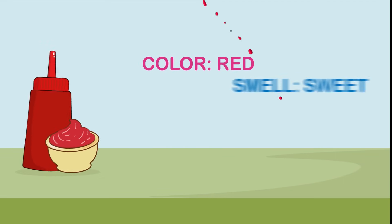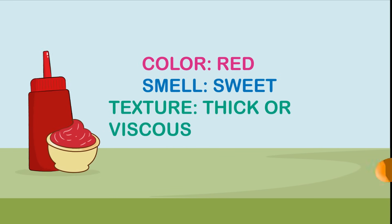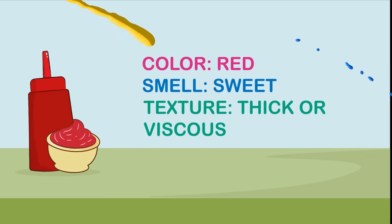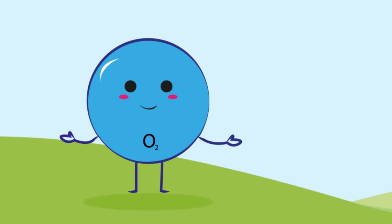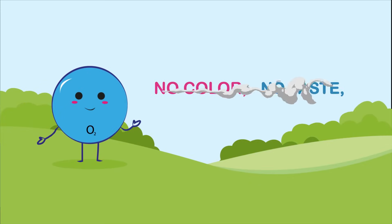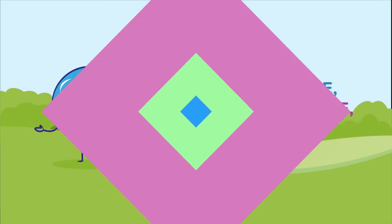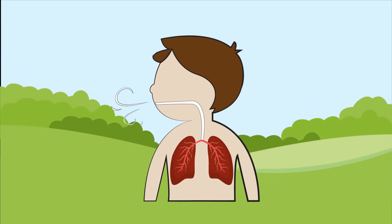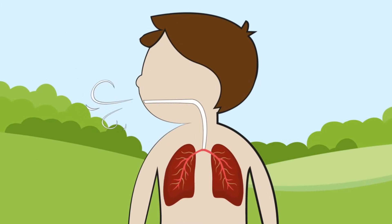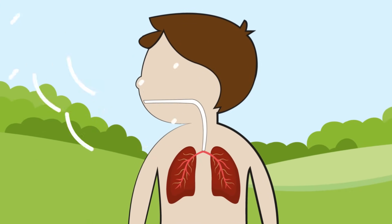Ketchup is a liquid. It's red, smells sweet, and is thick to the touch. Oxygen, the gas we breathe, has no color, no taste, texture, or shape. But it fills our lungs when we inhale, and spreads all throughout the room when we exhale.